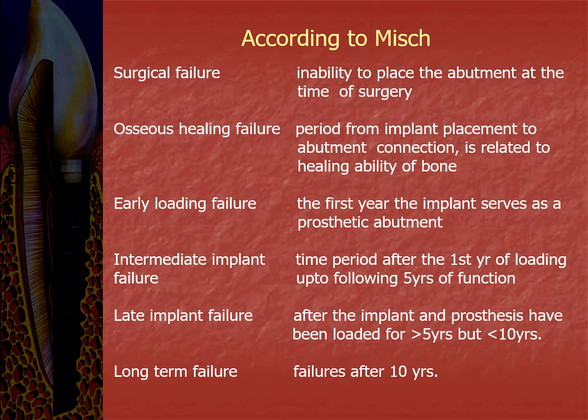Misch classified implant failures based on the time of occurrence into six types. First, surgical failure — during surgery. Second, osseous healing failure — during the healing period, related to the bone's healing ability. Third, early loading failure — during the first year as a prosthetic abutment. Fourth, intermediate implant failure — from one to five years. Fifth, late implant failure — five to ten years. Sixth, long-term failure — after ten years.